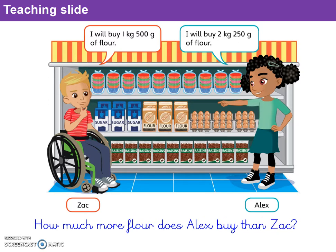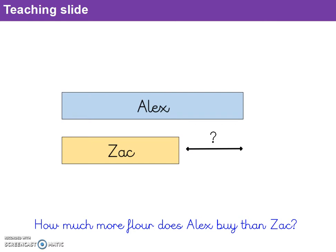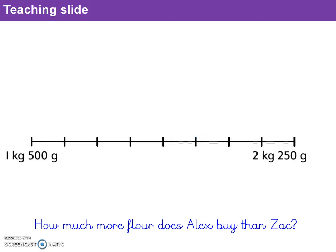For question 1b we were asked: how much more flour does Alex buy than Zach? Here you can see that problem represented as a bar model. We know that Alex buys more flour than Zach, and what we're looking for is how much more. We're looking for the difference between the amount Zach buys and the amount Alex buys — the difference between 2,250 grams and 1,500 grams, that gap between the yellow bar and the blue bar.